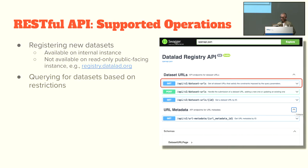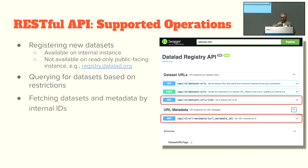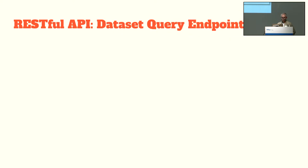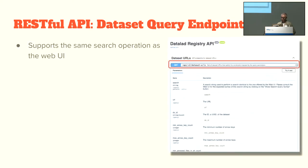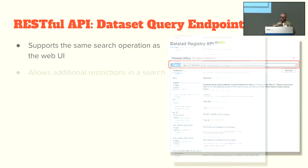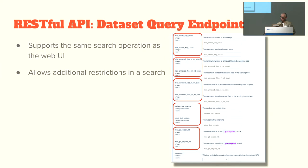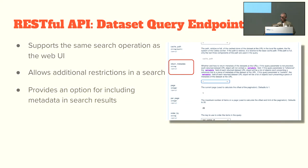Other supported operations include querying of datasets based on restrictions, and fetching datasets and related data by internal IDs. The dataset query endpoint supports the same search functionality as the web UI, but allows for additional restrictions on the search and provides an option for including metadata in the search results.